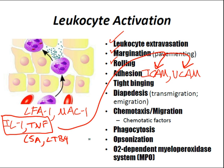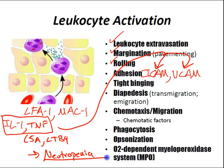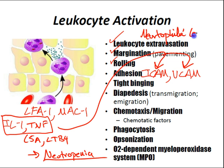Endotoxins enhance the activation of leukocyte adhesion molecules, leading to neutropenia. Catecholamines and corticosteroids inhibit the activation of leukocyte adhesion molecules — this is termed neutrophilic leukocytosis.